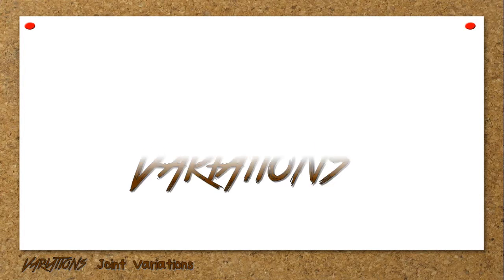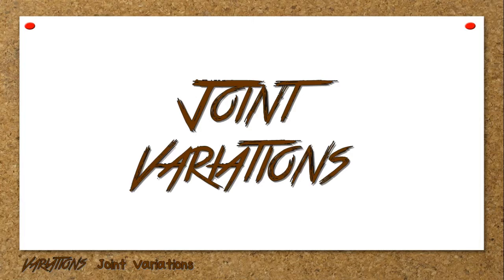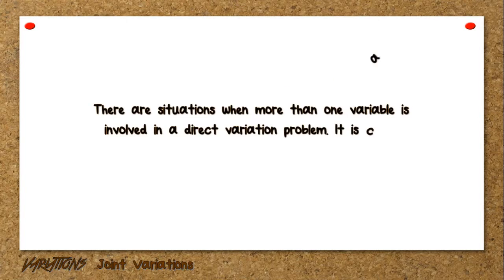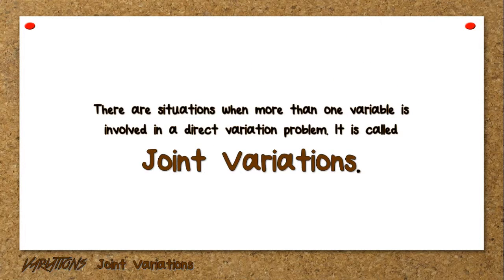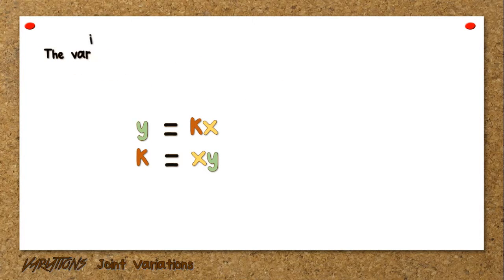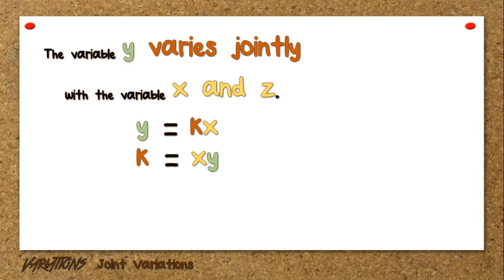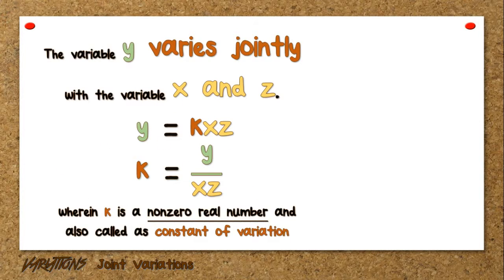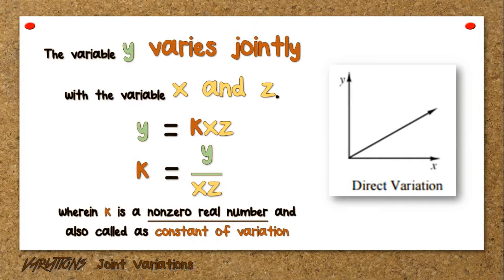Next, joint variations. There are situations when more than one variable is involved in a direct variation problem; it is called joint variation. The concept remains the same as direct variation except that additional variables are included in the product. Variable y varies directly with variable x becomes variable y varies jointly with variables x and z, wherein k is a non-zero real number also called the constant of variation. Note that the keyword changes to 'varies jointly.'